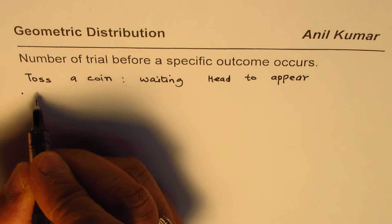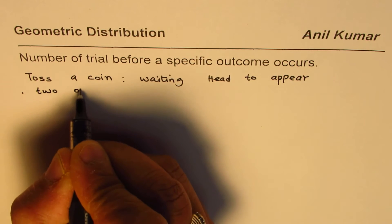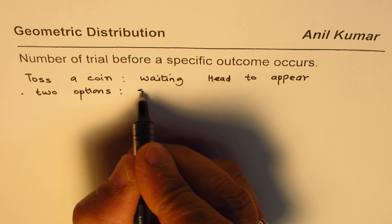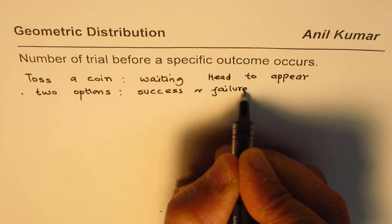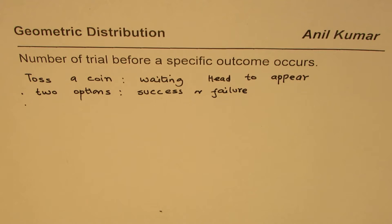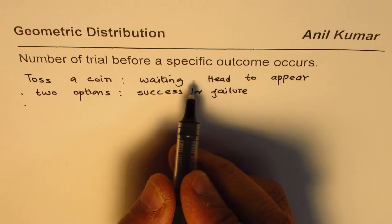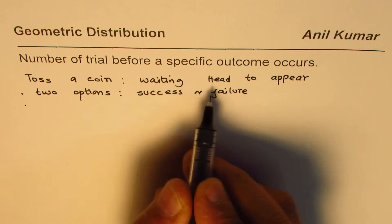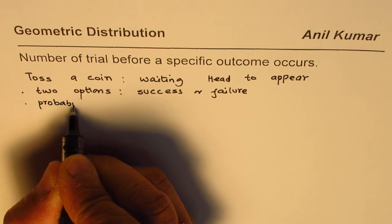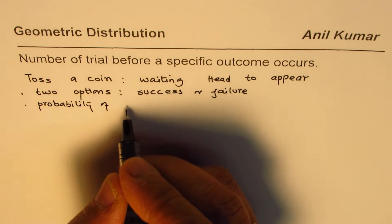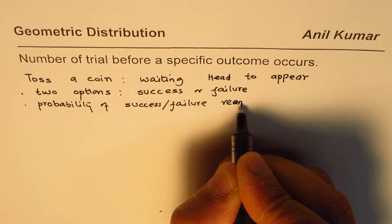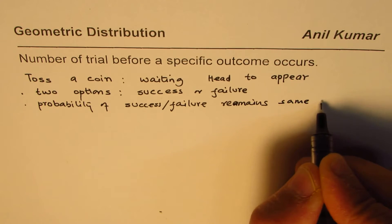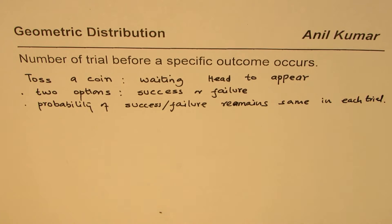In such examples, it will normally be a geometric distribution. There are a few other pointers: we should have only two options — success and failure. For example, whether head appears or it does not appear — success or failure. We have only two options, and also, just as in Bernoulli's trials, the probability of the event in each trial remains the same.